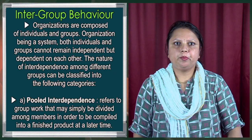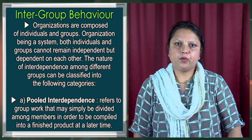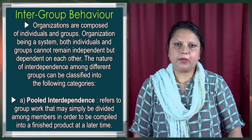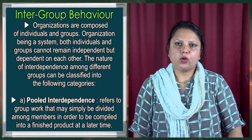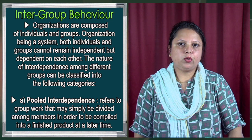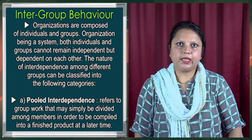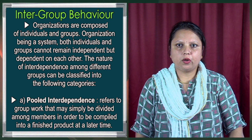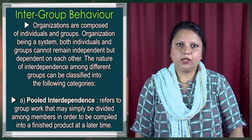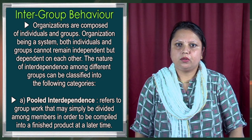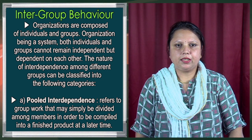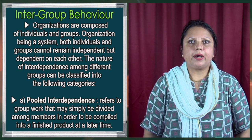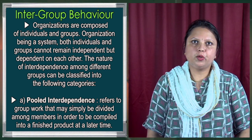Now we will discuss about inter-group behavior. Organizations are composed of individuals and groups. Organizations being a system, both individuals and groups cannot remain independent but are dependent on each other. The nature of inter-dependence among different groups can be classified into the following categories. The first is pooled interdependence, which refers to group work that may simply be divided among the members and then compiled into a finished product at a later time — meaning each member works individually and the results are combined.